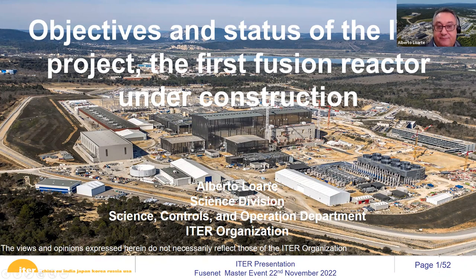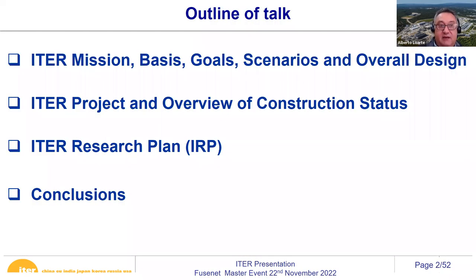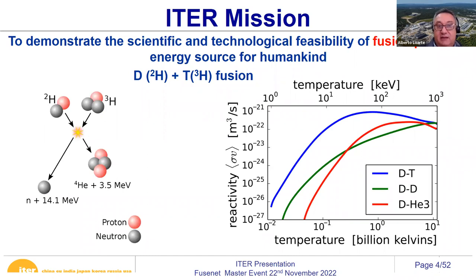This is a photo of the ITER site. I'll give an overview since many of you are starting in fusion this year. I'll cover the basic physics basis of ITER, its goals, the overall design, then where we are in construction, and finally what we plan to do experimentally to achieve the fusion goals. ITER wants to demonstrate the scientific and technological feasibility of fusion power, based on the fusion reaction that produces helium and neutrons.